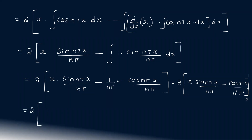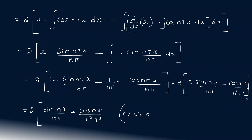Continuing the integration: equals 2 into x times sin n pi x by n pi, plus cos n pi x by n squared pi squared, evaluated from 0 to 1. Substituting the limits: at x equals 1, we get sin n pi by n pi plus cos n pi by n squared pi squared; at x equals 0, we get 0 plus cos 0 by n squared pi squared.